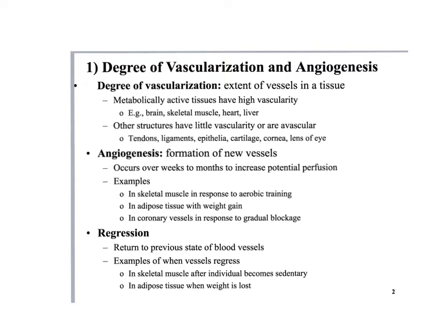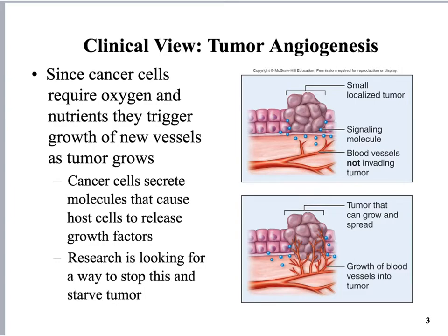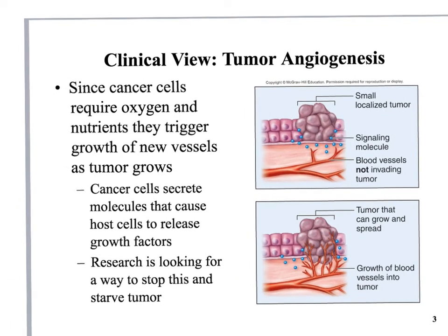Why is it important that tissue stimulates production of new blood vessels? More tissue requires more blood vessels because blood vessels are the source of nutrients, oxygen, glucose, and the way to get rid of waste. In some cases, we don't want angiogenesis to happen. Tumor angiogenesis is the big one. Cancer cells grow just like normal cells — maybe too fast and uncontrolled — but they still need the same things normal cells need.